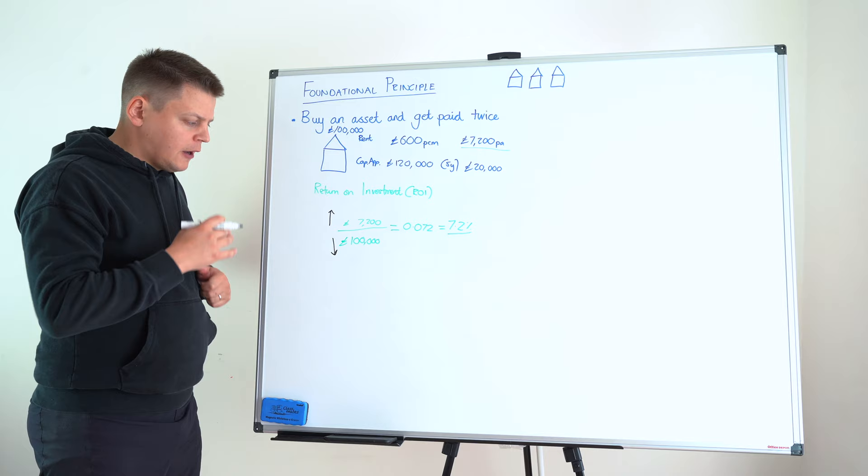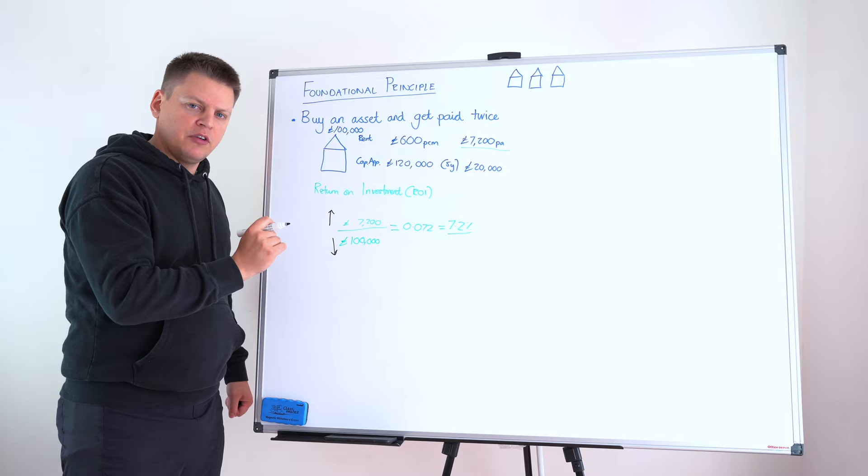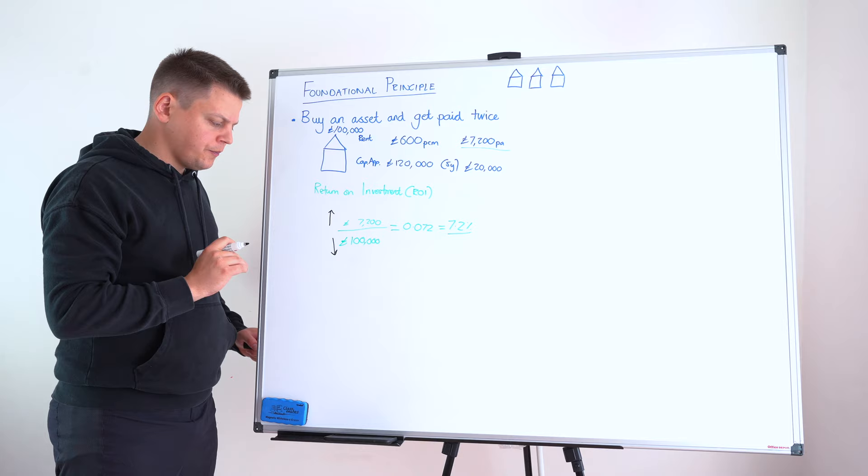Now, for the purposes of this illustration, we are going to say that we cannot increase our return. £600 per calendar month is the market rent. So, how do we reduce our investment?